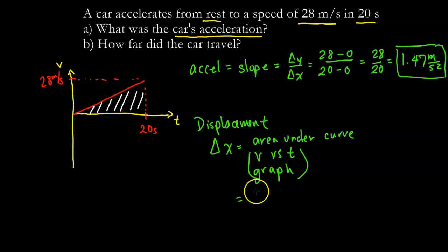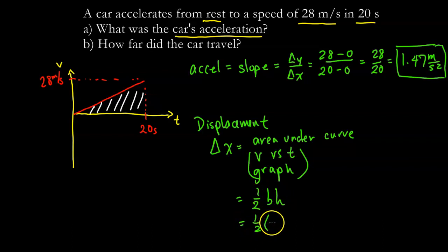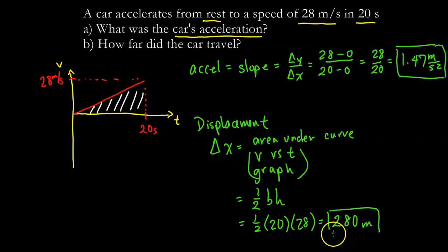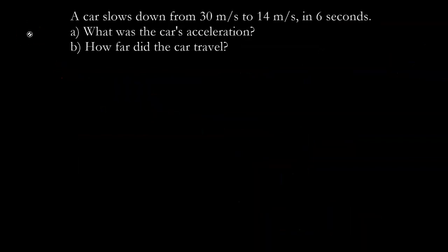The equation for a triangle's area is one half base times height. The base is 20 seconds and the height is 28 meters per second, so we have one half times 20 — which is 10 — times 28, giving us 280 meters. So this car travels 280 meters during this 20 seconds of acceleration.